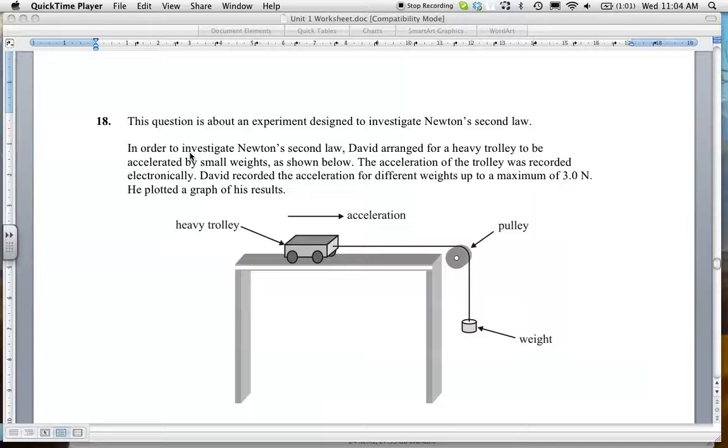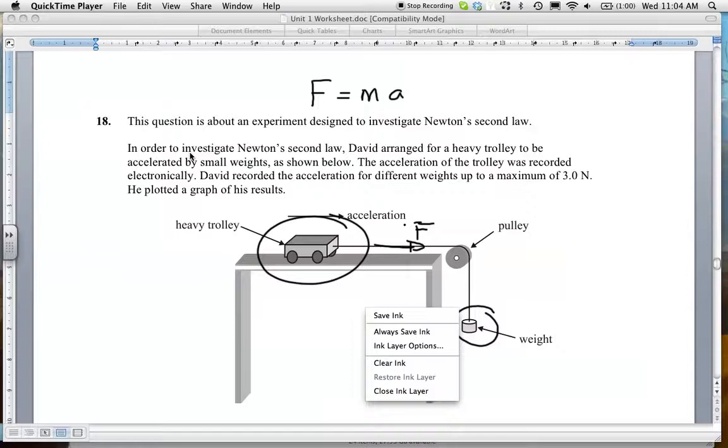This one has to do with Newton's second law. Remember, we haven't actually got there yet if we're just starting IB1 now. Force is equal to mass times acceleration. That is Newton's second law. This is an experiment to investigate that. We have a weight here providing a force or tension in the rope, and it's going to cause this trolley to accelerate. Let's go through the question and hopefully get things to seem a little bit clearer.